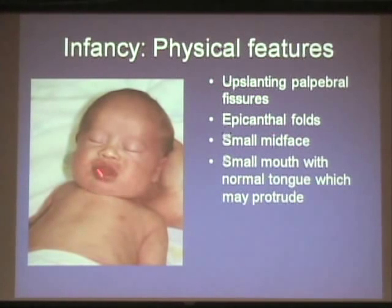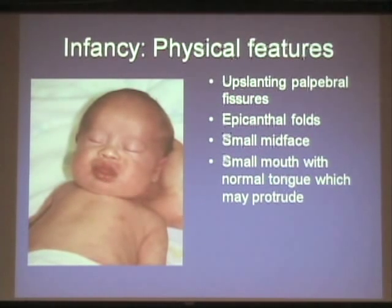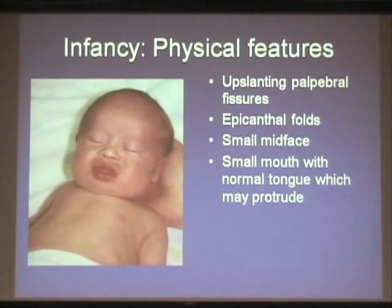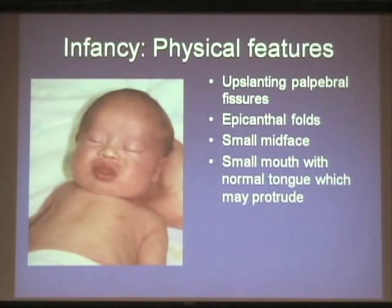There used to be an idea that children with Down syndrome had large tongues, because their tongues were often hanging out. Over time it's become apparent that the mouth is actually a little small — it's a normal-sized tongue in a somewhat smaller mouth. Because of lower muscle tone, the tongue has more tendency to hang out. Over time this improves, and to some extent it's habit — parents will remind their kids to keep their tongue in their mouth.